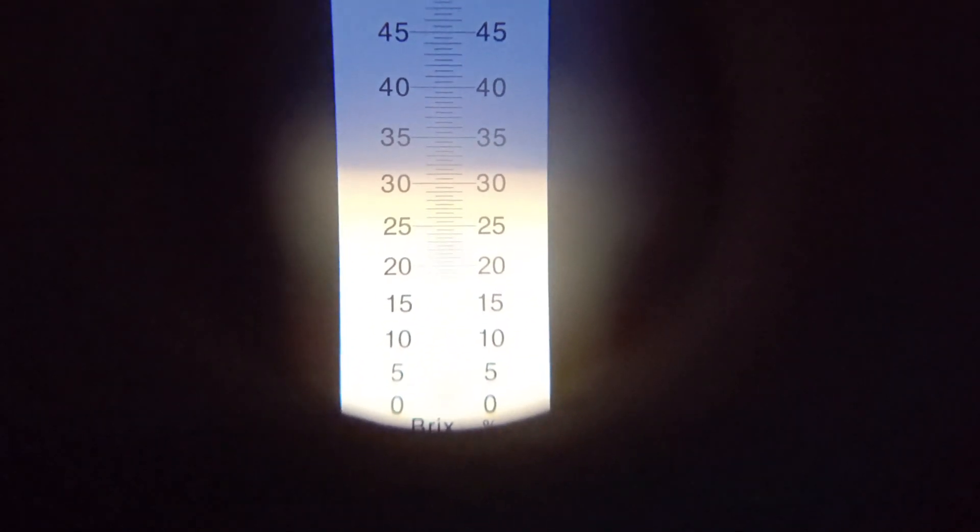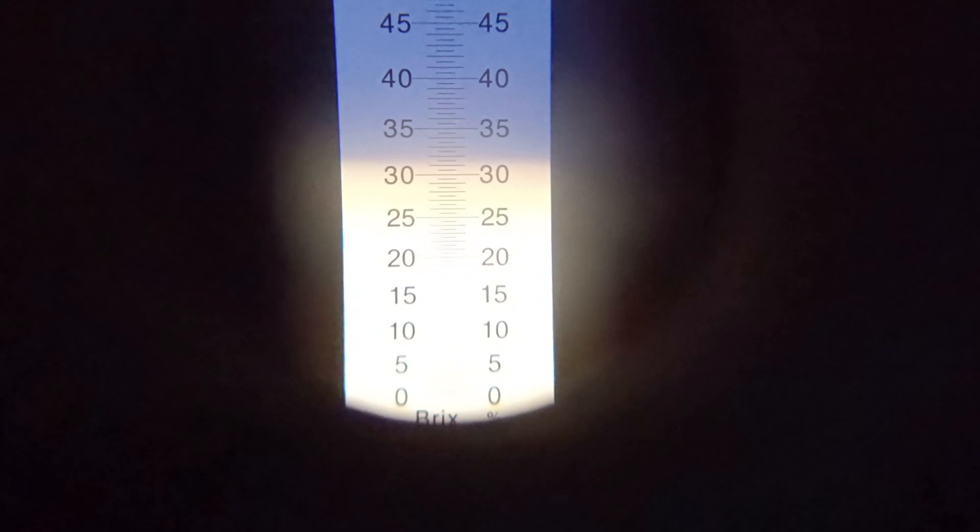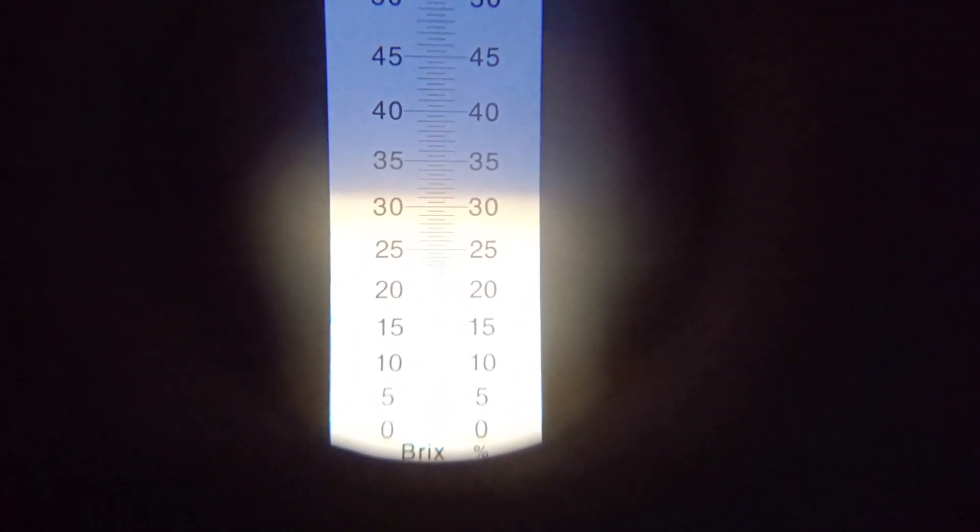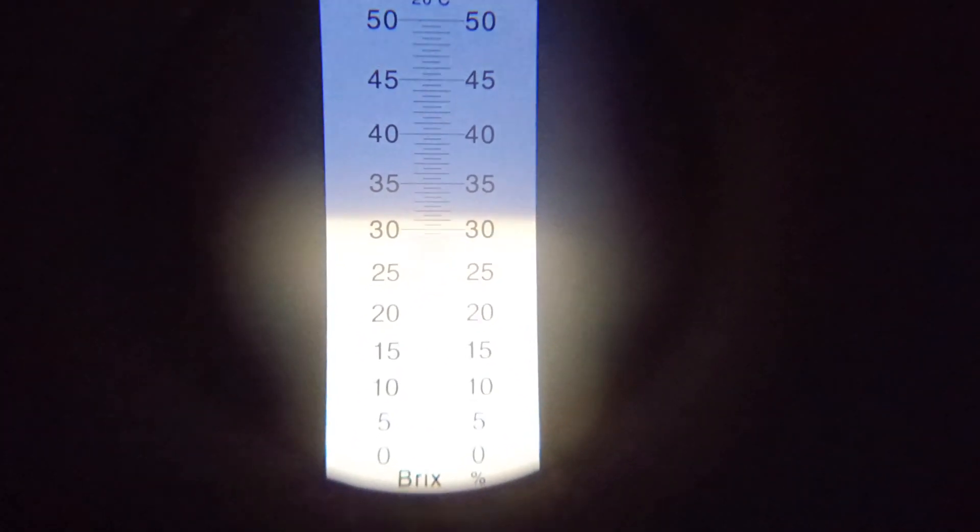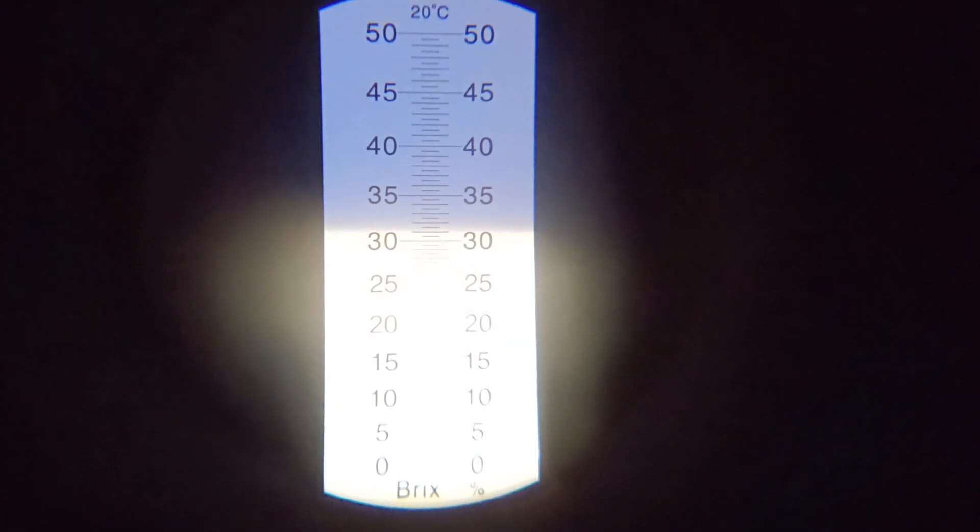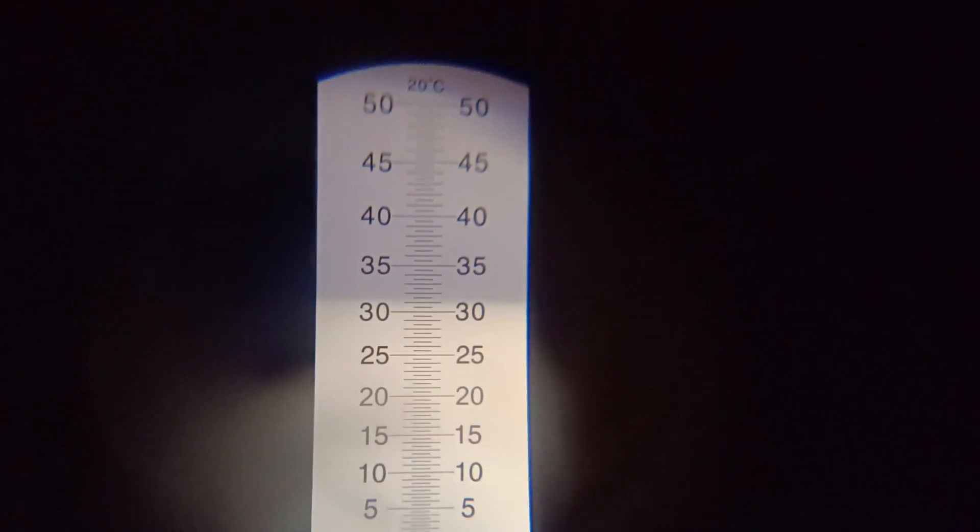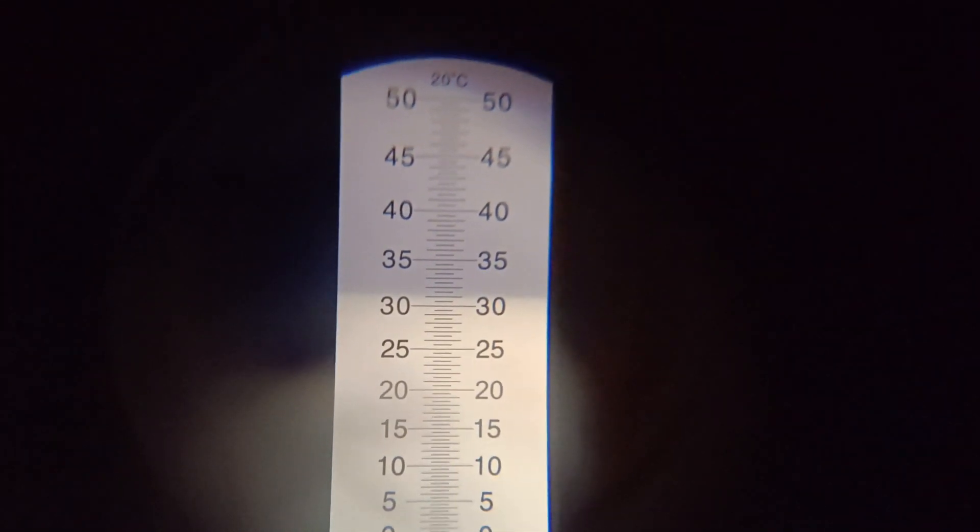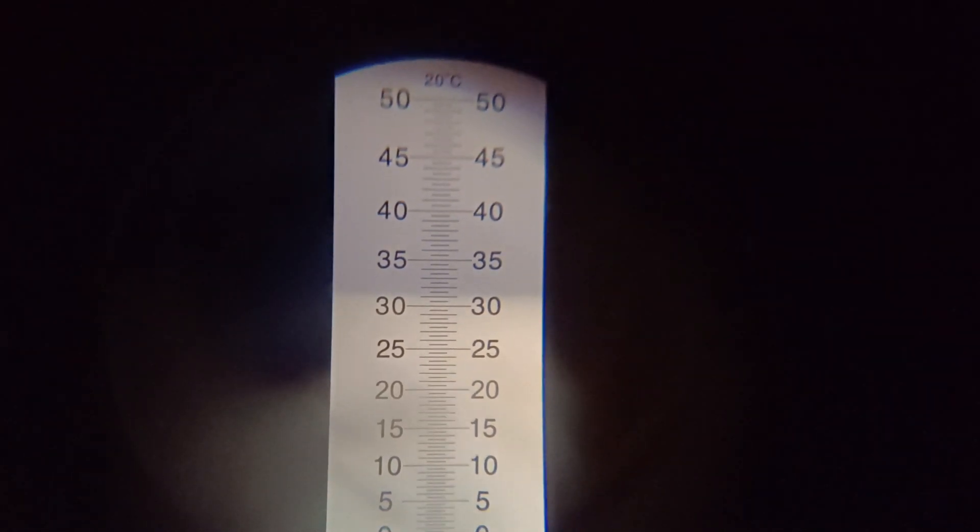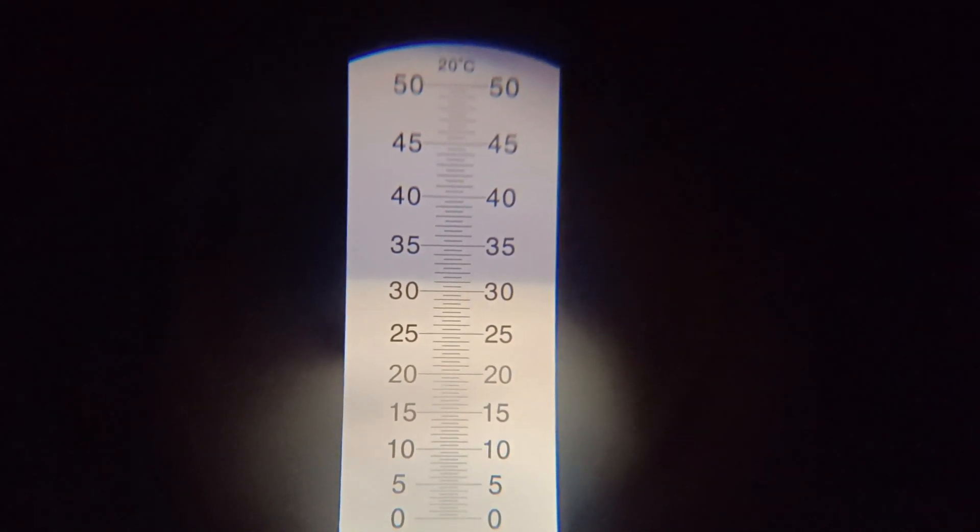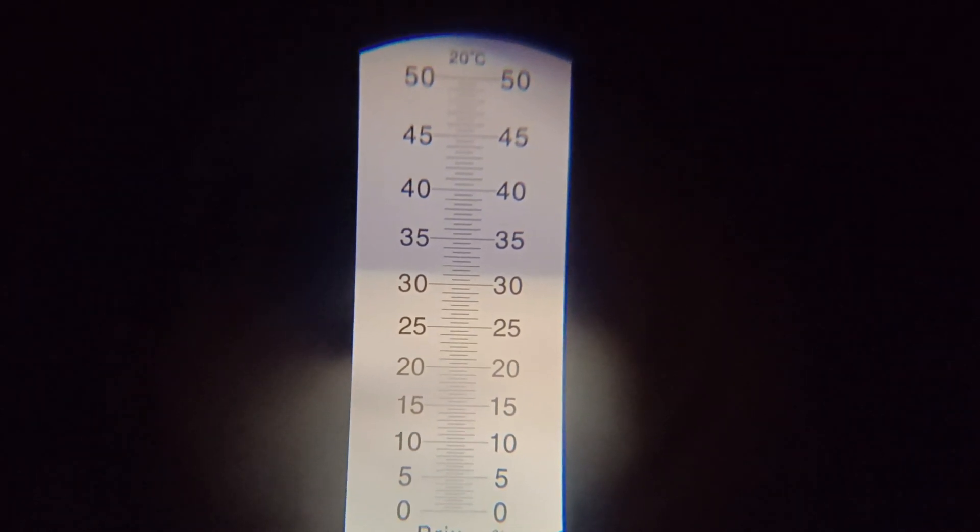I am seeing around 32 Brix, 31.5 to 32. This fruit is harvested from Mangalore. With Mangalore climatic conditions itself, I am getting around 31.5 to 32 Brix. It's fluctuating between 31 and 32. I am getting around 31 Brix from Mangalore climatic conditions.